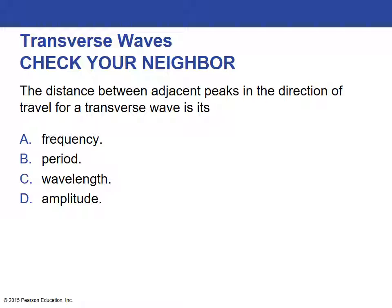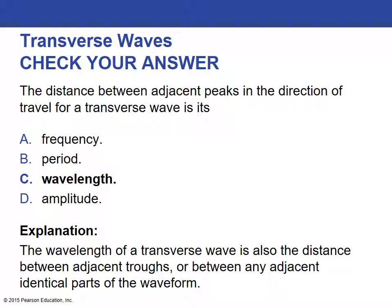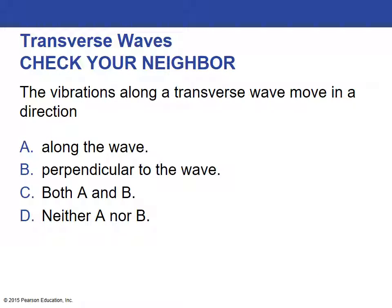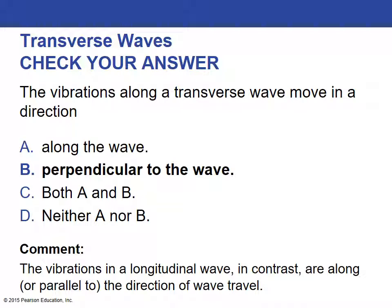Review question: The distance between adjacent peaks in the direction of travel for a transverse wave is the frequency, period, wavelength, or amplitude? The answer is the wavelength. Also: the vibrations along a transverse wave move in a direction along the wave, perpendicular to the wave, both, or neither? The answer is perpendicular to the wave — those vibrations move up and down while the wave itself moves forward.